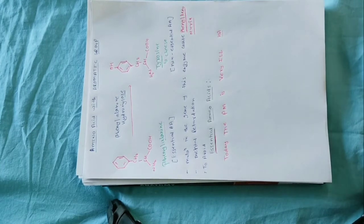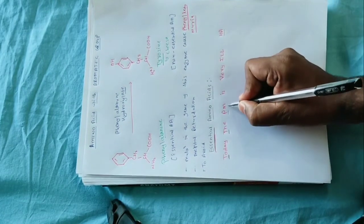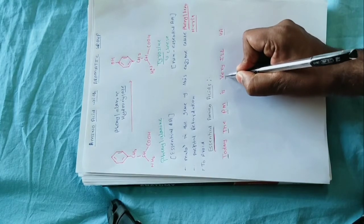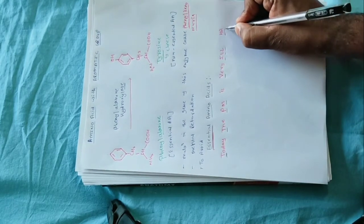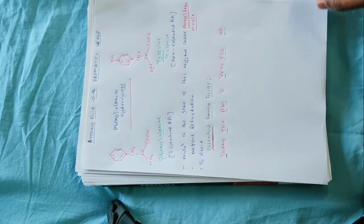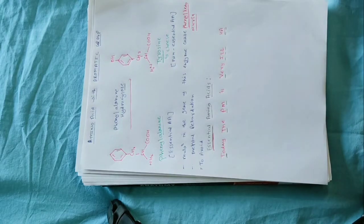इनको याद रखने के लिए एक trick है — 'Today the PM is very ill HA'. यह टोटल आपके पास 10 amino acids हैं, और यह 10 के 10 आपको याद रखने हैं कि वो 10 amino acid कौन से हैं। हम एक एक के बारे में ज़िक्र करते हैं।